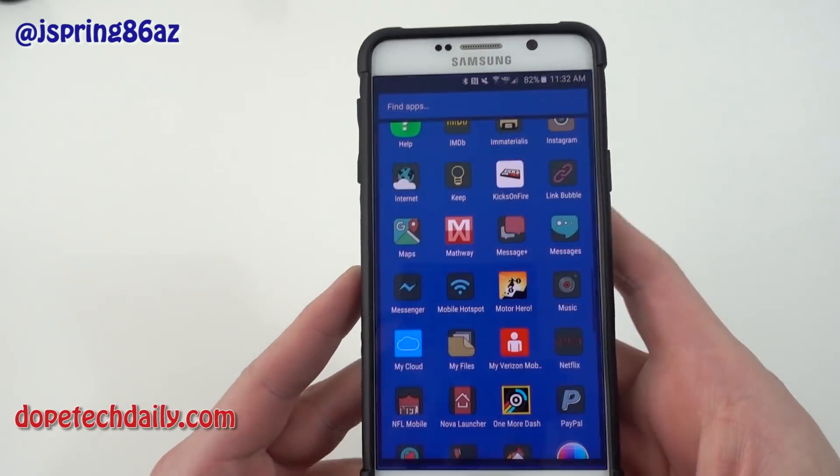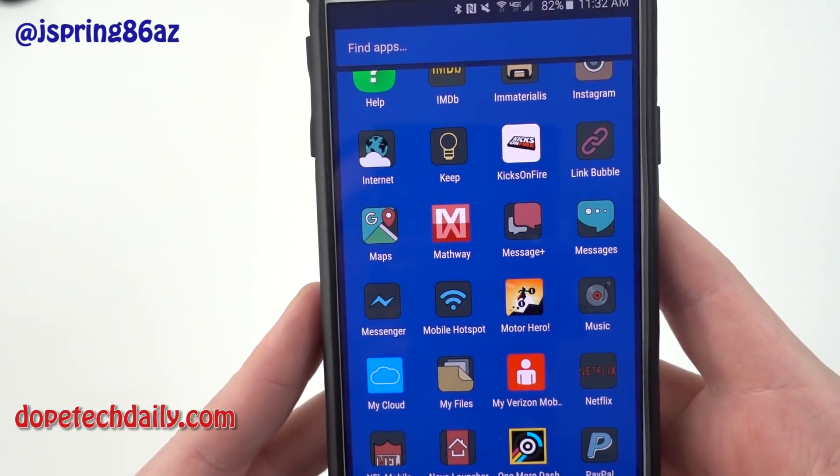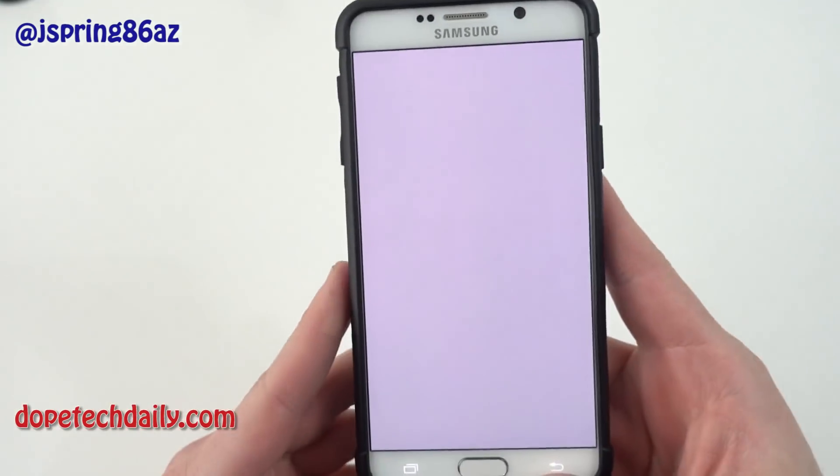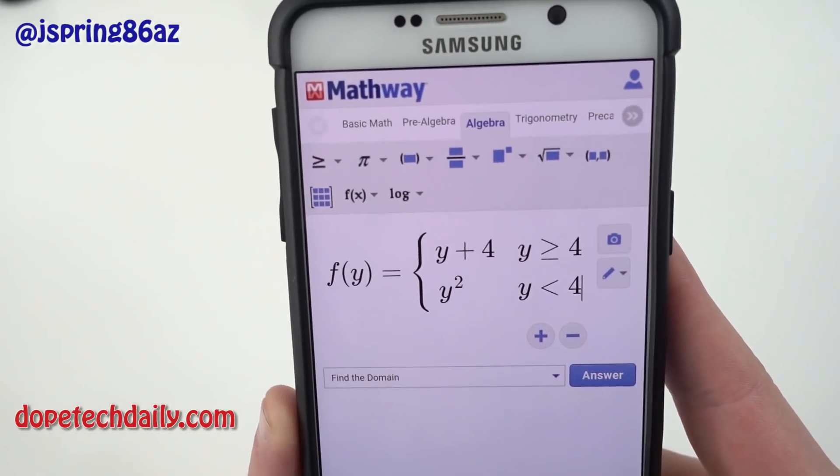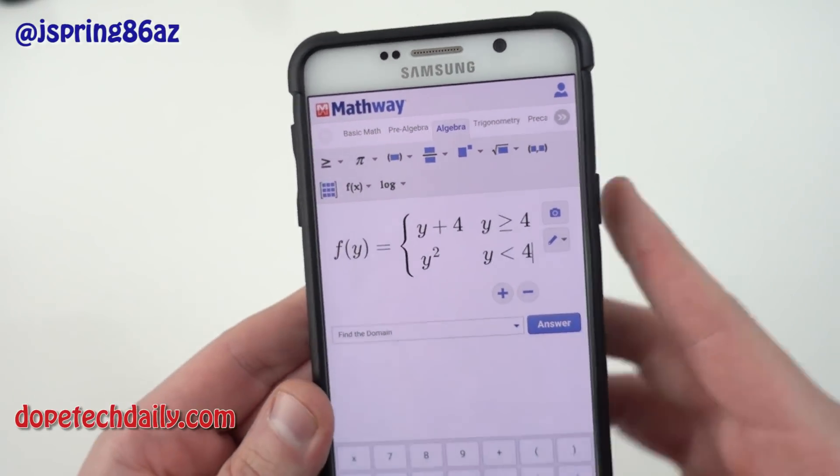So you see here let me just zoom in show you guys the app icon. There's the Mathway app itself. If we click into Mathway you'll be greeted here with the Mathway screen. You can see right there it's got various tabs at the top.